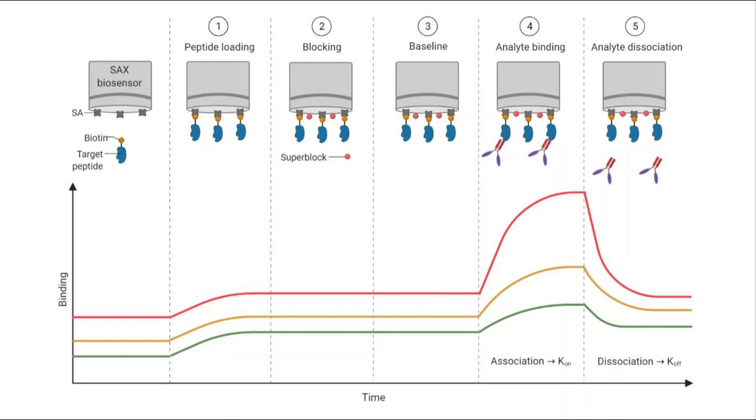After this step, the sensor is submerged into a solution containing a blocking agent to suppress any possible non-specific interactions with the biosensor. Then another baseline is recorded, and finally the biosensors are dipped into different concentrations of a second protein to find the association and dissociation constants with the respective binding partner. A change in the local refractive index causes a shift in the interference pattern and therefore can be used to define the association and dissociation constants.